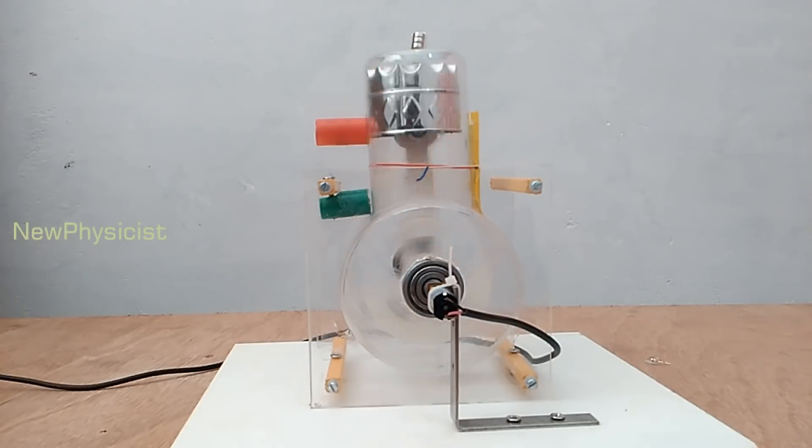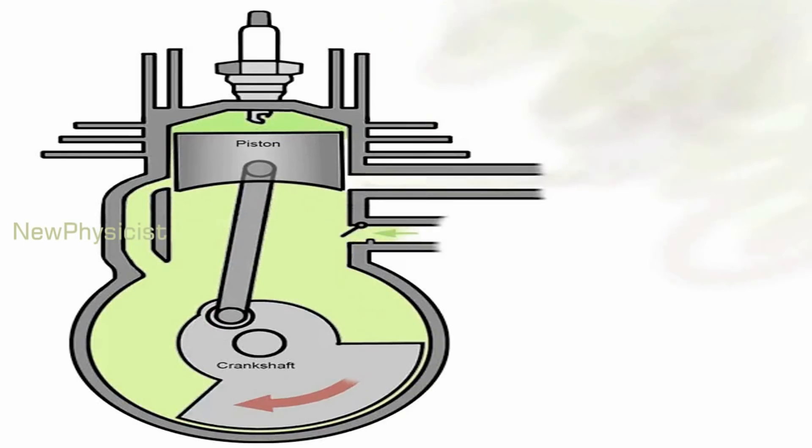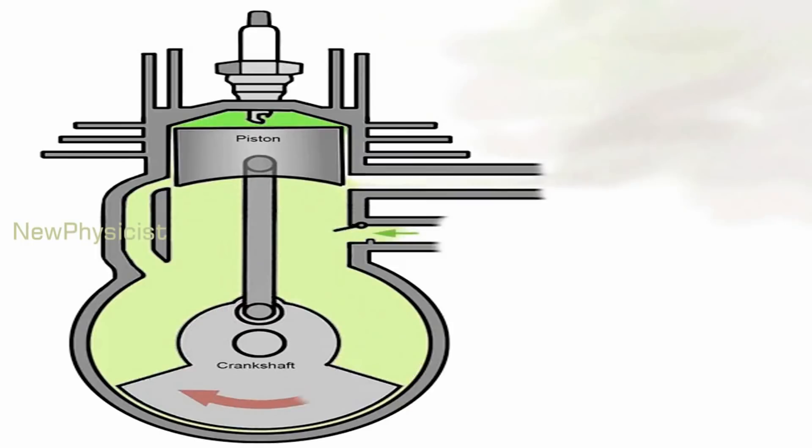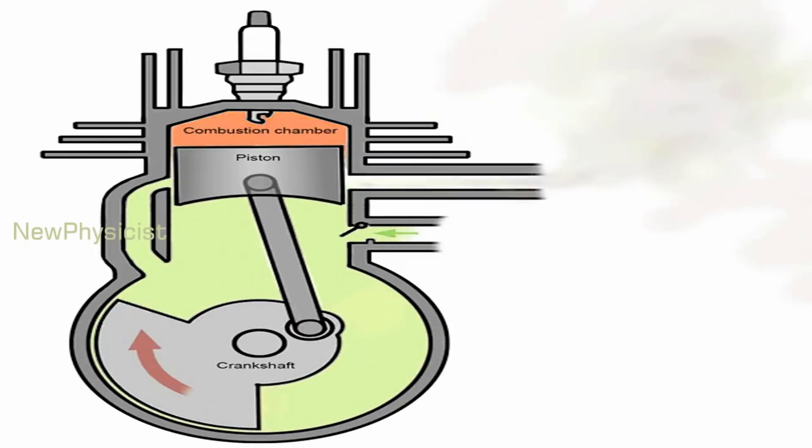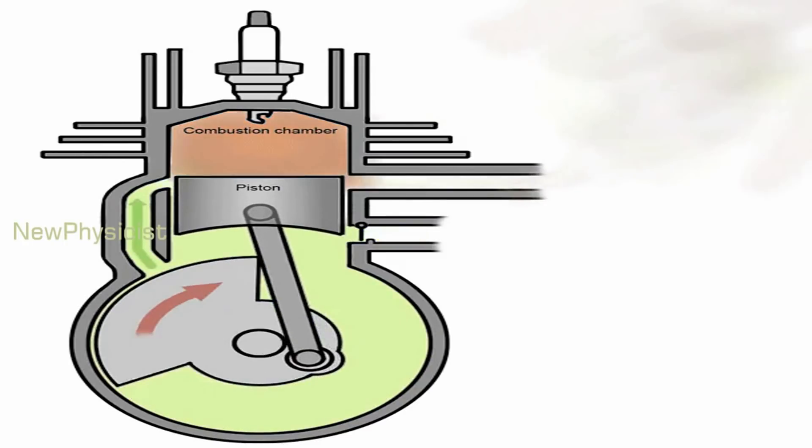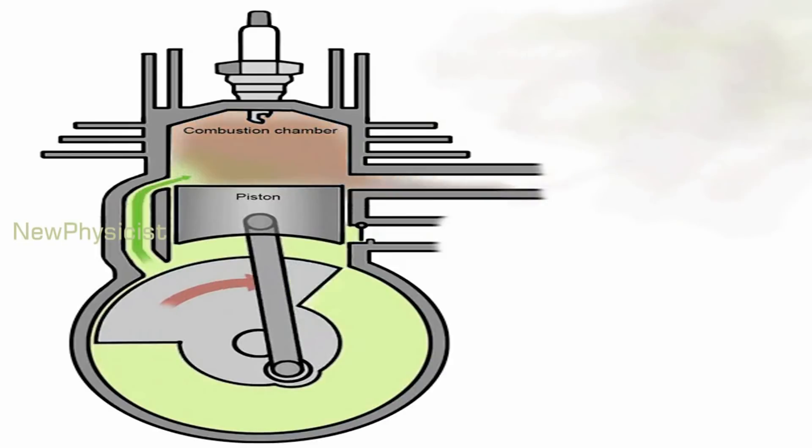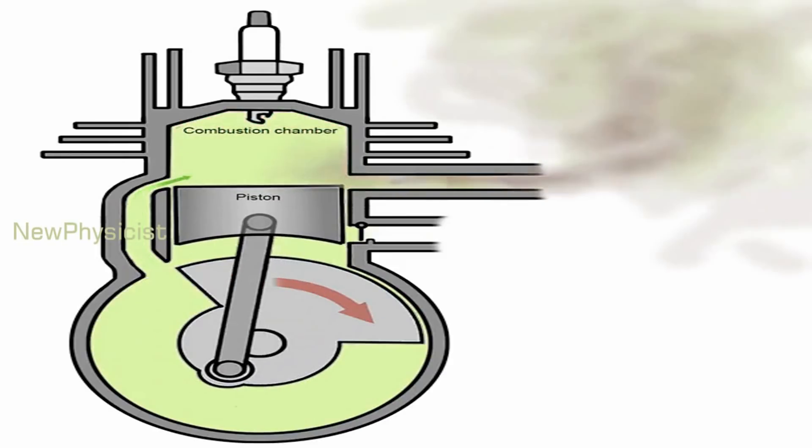A four-stroke engine takes four full movements of a piston to complete the engine cycle, whereas in two-stroke engines all the processes are completed in two movements of a piston. As the two-stroke piston rises on compression, its underside creates a partial vacuum in the crankcase. An intake port opens, allowing air to rush into the crankcase through a carburetor.